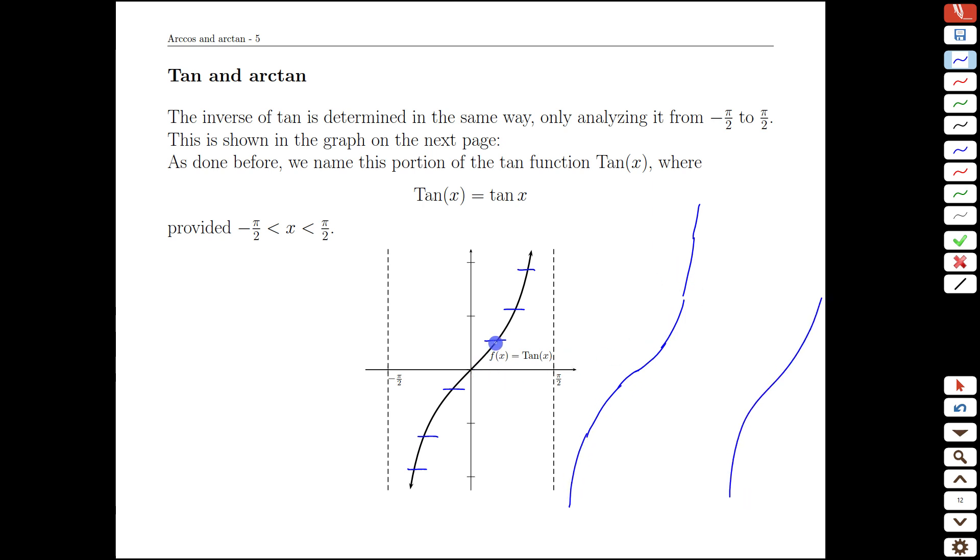Because then we'd be crossing the same y value at different x points. If we limit ourselves just to this interval here, negative pi over 2 to pi over 2, we have one smooth continuous version of the tangent function, which does pass the horizontal line test. So we define capital T Tan of x as the same as tan, no difference, except we limit ourselves to this negative pi over 2 to pi over 2 interval.